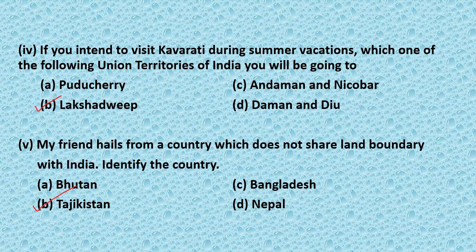Question 4: If you intend to visit Kavaratti during summer vacations, which one of the following union territories of India will you be going to? Option A: Pondicherry, Option B: Lakshadweep, Option C: Andaman and Nicobar, Option D: Daman and Diu. Answer: Option B, Lakshadweep.